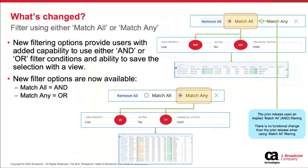The new capabilities for match all or match any. In the upper right of the screen, match all is selected — this is essentially an AND condition, which was the default capability of the product before inserting these two options. Using the examples here, if I'm looking for an idea with low priority, I want the system to return ideas with low priority, and they're not active, and their financial status is on hold. So the list is going to focus on all those conditions being met.